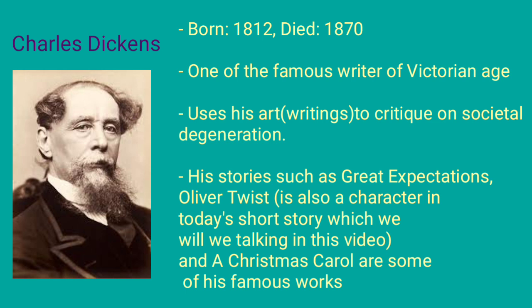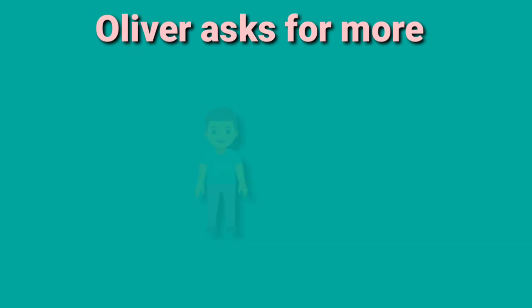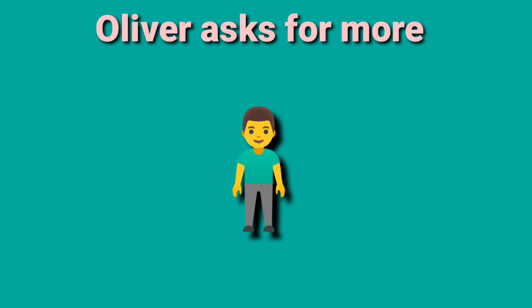Now we are going to look at the short story — what it is about and what is the summary. Basically this short story is about a small boy and his whole journey of life and what kind of consequences he has to face because he was born poor during the Victorian period.